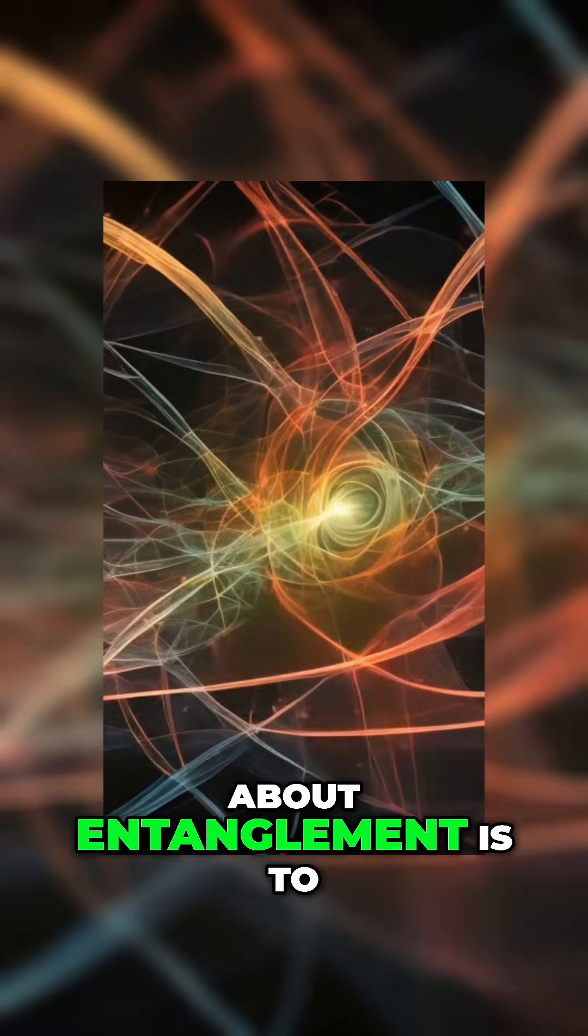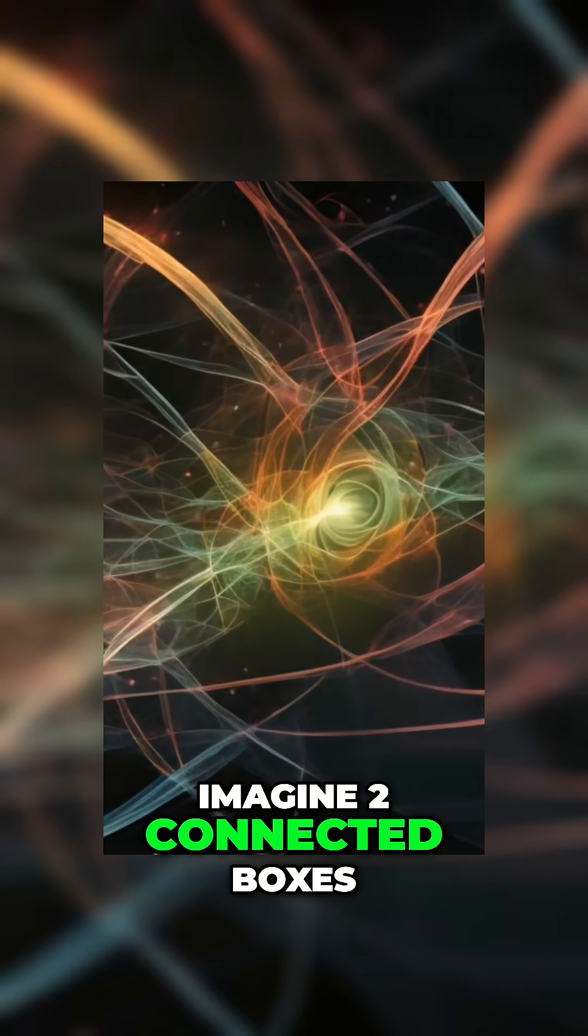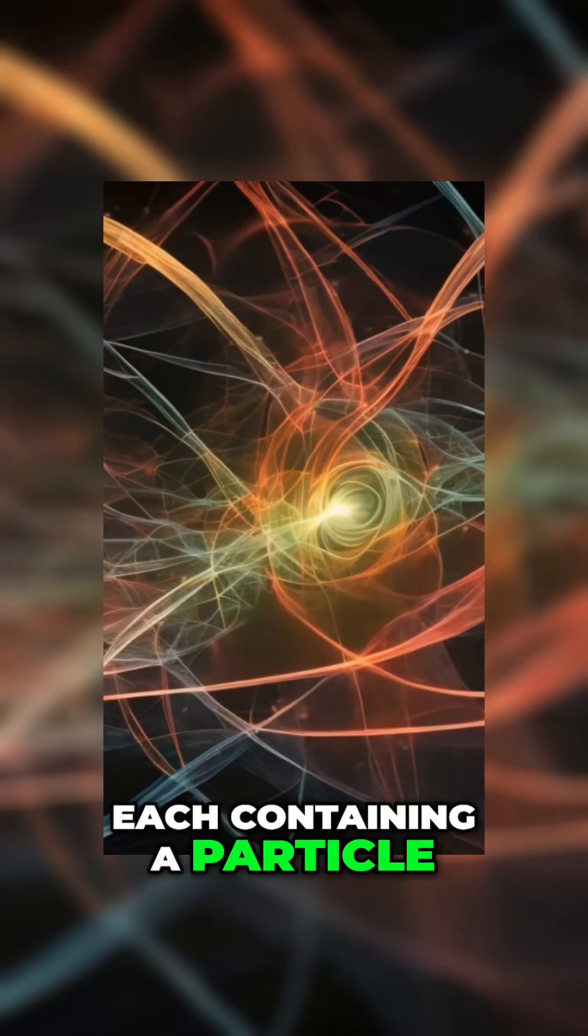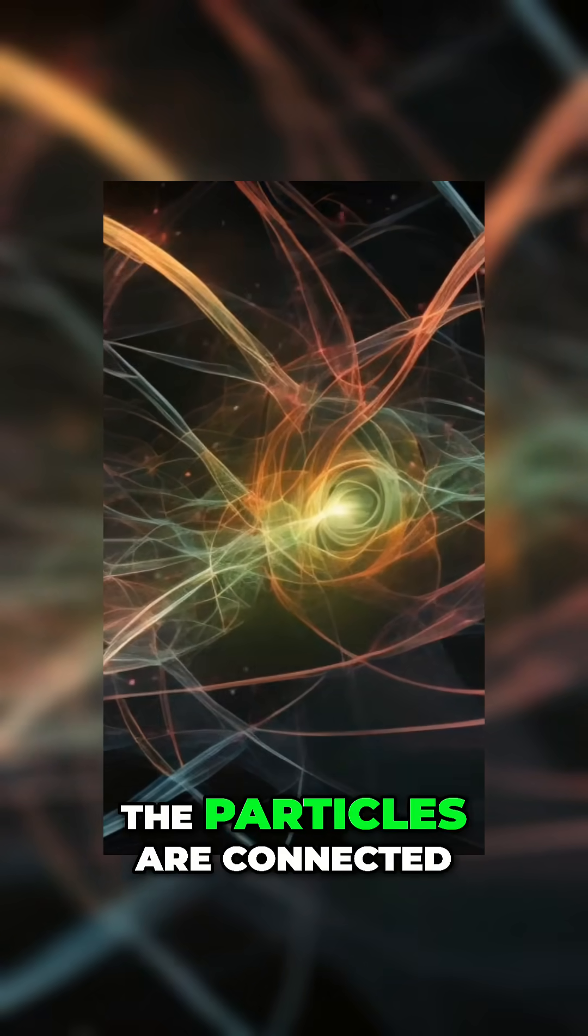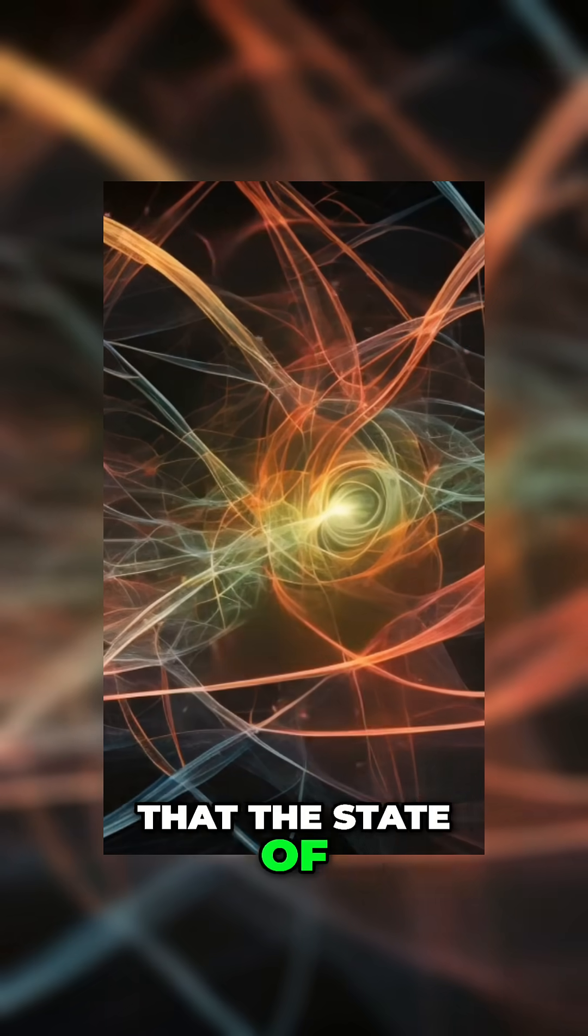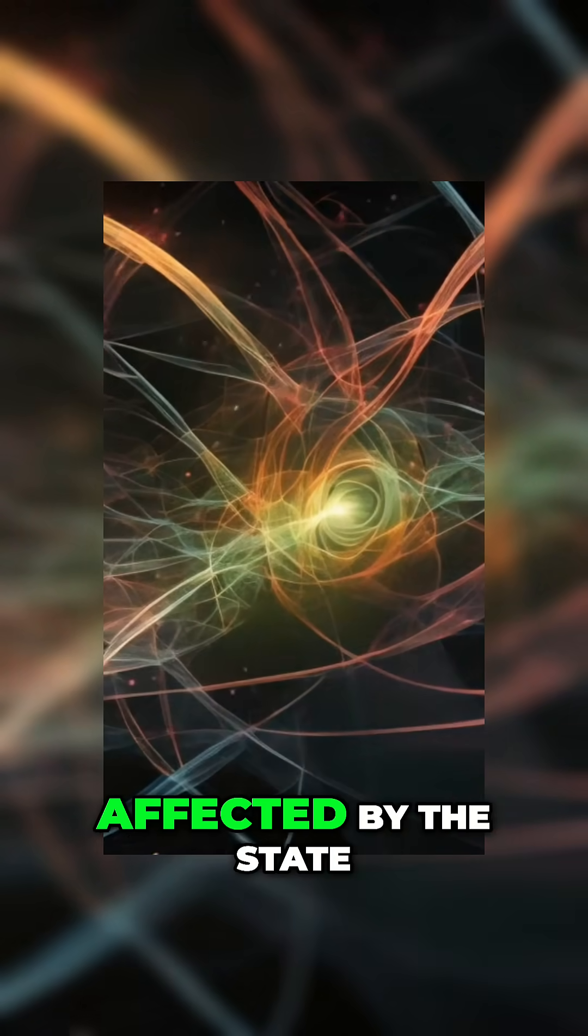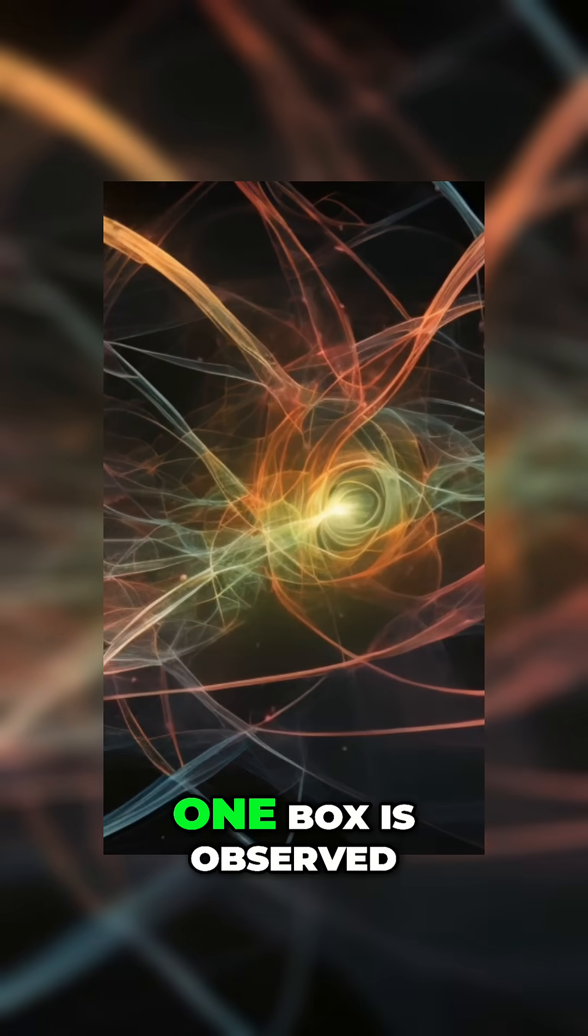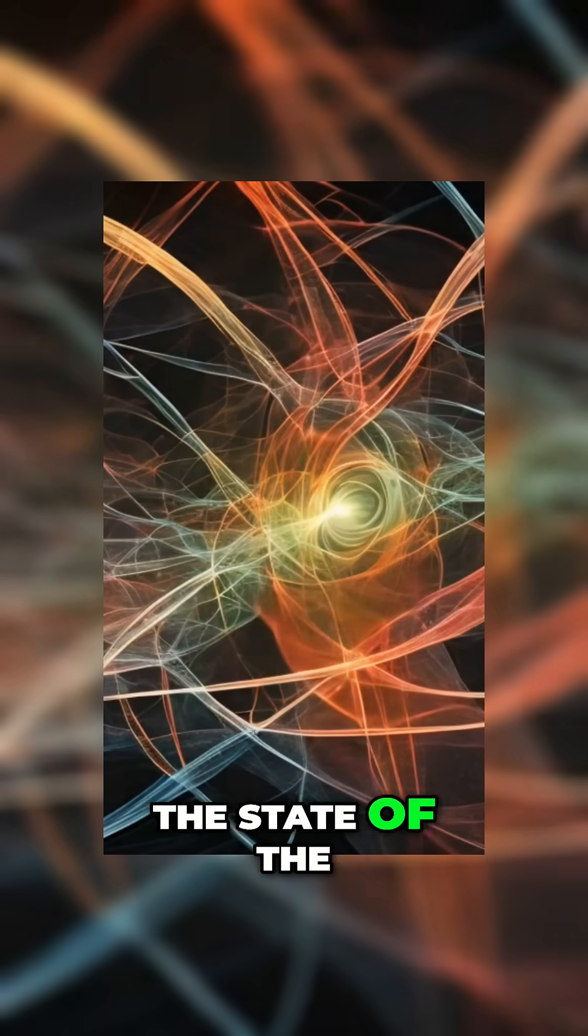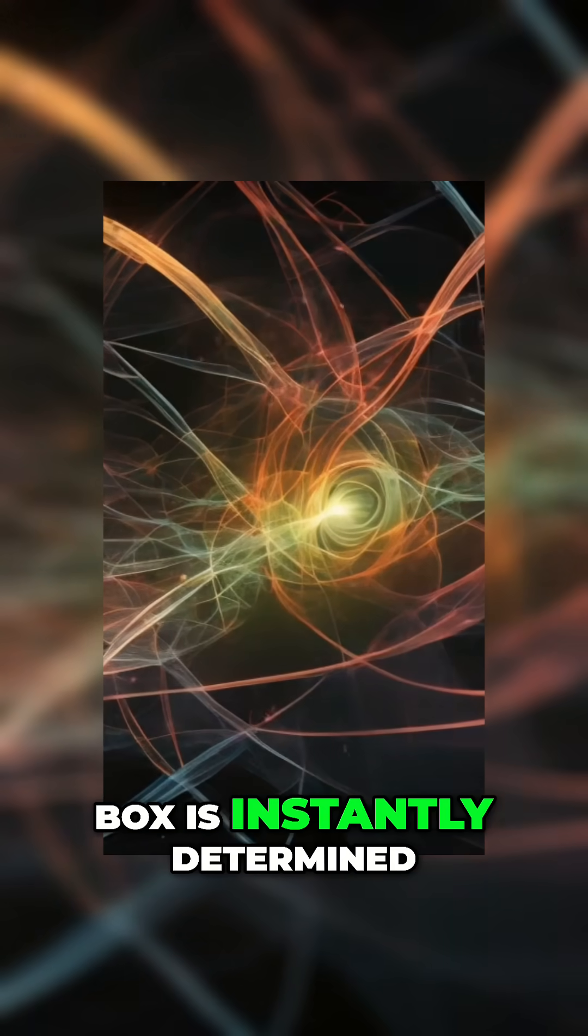One way to think about entanglement is to imagine two connected boxes, each containing a particle. The particles are connected in such a way that the state of one particle is instantly affected by the state of the other. When the particle in one box is observed, the state of the particle in the other box is instantly determined, regardless of the distance between them.